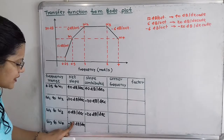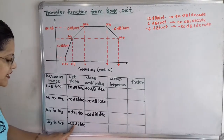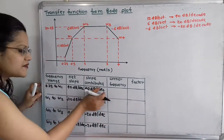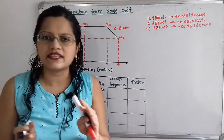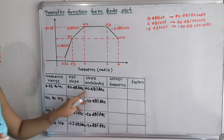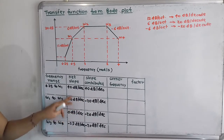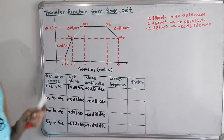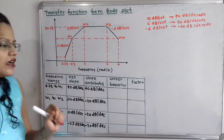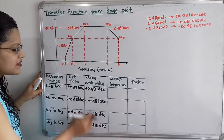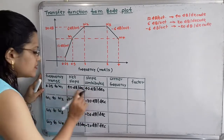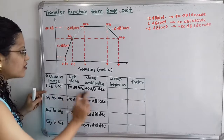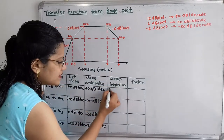For omega 3 to omega 4, the slope contributed is minus 20. For the first frequency range, no slope is added or subtracted — we took the net slope as it is. So we write here: no corner frequency for this first frequency range.